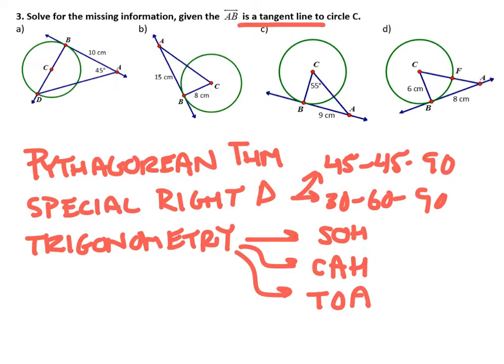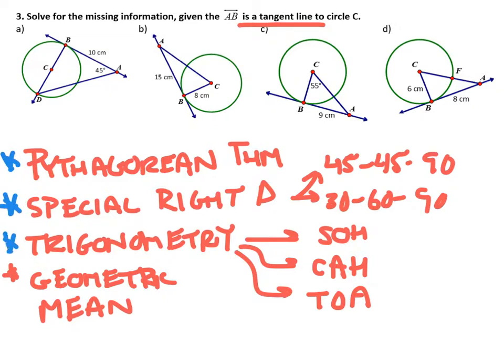And then there might be a geometric mean, depending on if you've covered that or not, but geometric means that relationship show up with right triangles as well. So what I'm trying to say to you is that these four guys are always in the game when you have a right triangle.